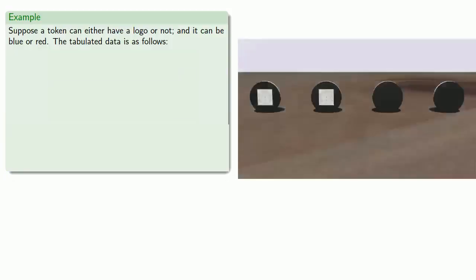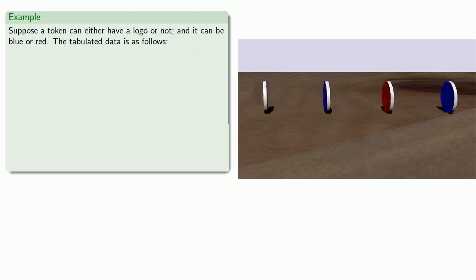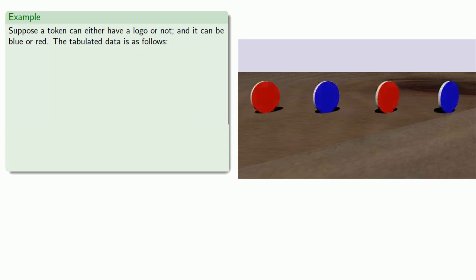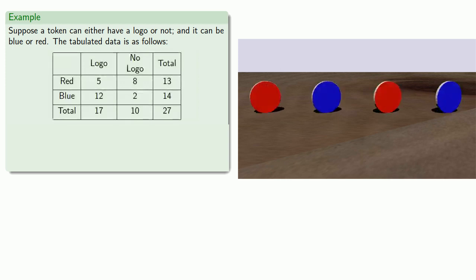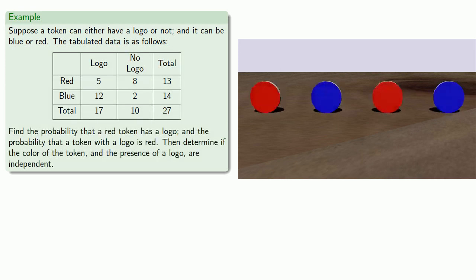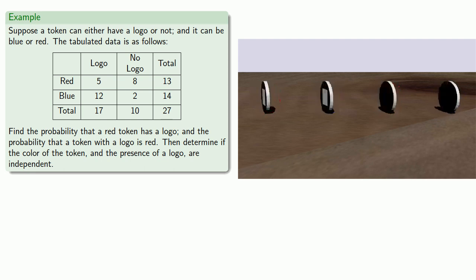For example, suppose we have a bunch of tokens. The token can either have a logo or not, and it can be blue or red. We know the tabulated data over whether or not the token has a logo, and whether it's a blue or red token. Let's find the probability that a red token has a logo, and the probability that a token with a logo is red. Then let's determine if the color of the token and the presence of a logo are independent.